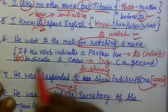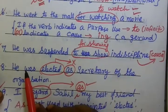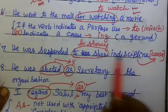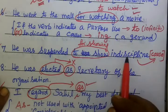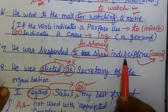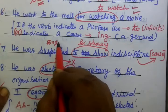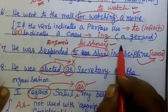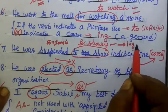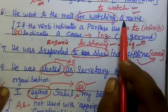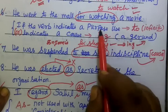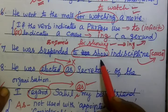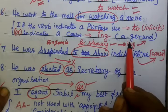And the second example: he was suspended for showing indiscipline. Indiscipline is a cause, not a purpose. When there is a cause, we are using the gerund — the ING form. So 'to' infinitive is used for purpose and the gerund ING form is used for cause.